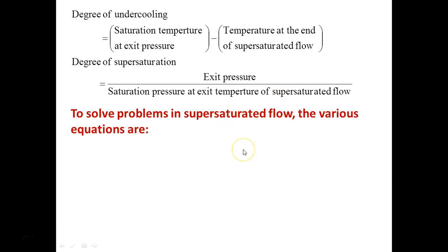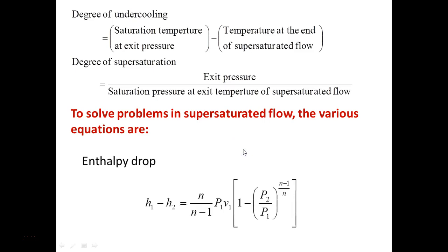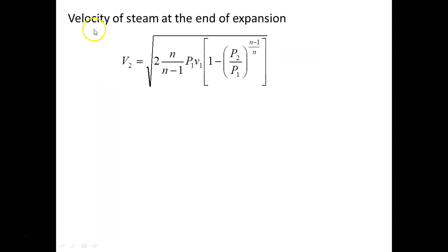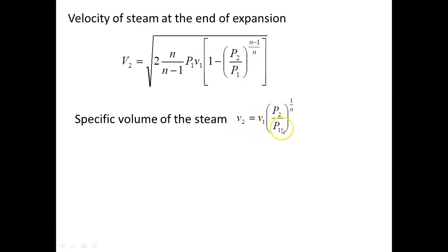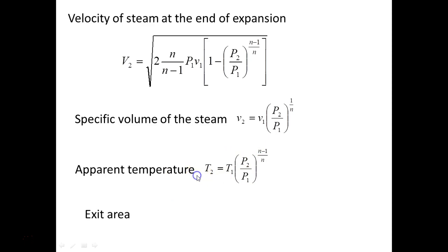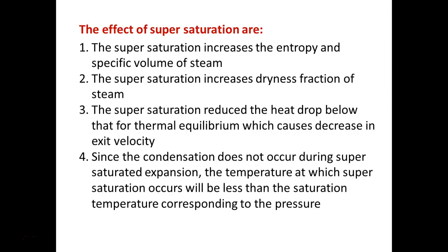To solve problems on super-saturated flow, use the polytropic flow equations rather than steam tables. The enthalpy drop: H₁ − H₂ = n/(n−1) · P₁V₁ · [1 − (P₂/P₁)^((n−1)/n)]. Velocity: V₂ = √(2n/(n−1) · P₁V₁ · [1 − (P₂/P₁)^((n−1)/n)]). Specific volume: v₂ = v₁ · (P₁/P₂)^(1/n). Apparent temperature: T₂ = T₁ · (P₂/P₁)^((n−1)/n). Exit area: A₂ = m · v₂ / V₂.